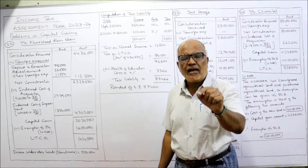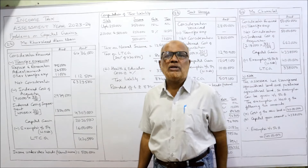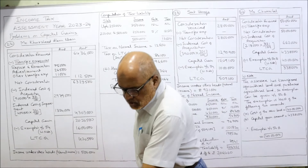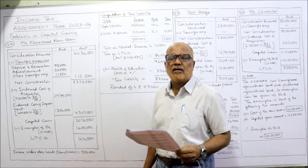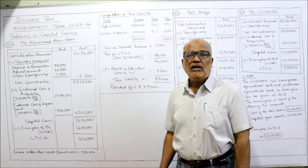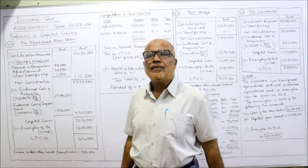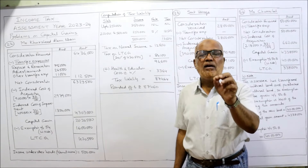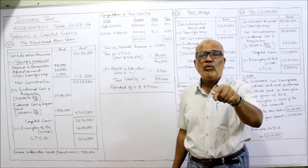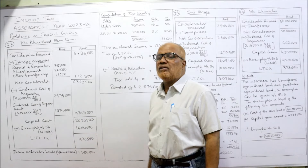From the net consideration we subtract the indexed cost of acquisition and indexed cost of improvement. Since he purchased the house before 1-4-2001, the assessee can choose the higher of actual cost or FMV. Actual cost is Rs. 4,00,000 but FMV on 1-4-2001 is Rs. 9,50,000, so he selects Rs. 9,50,000. However, the stamp duty value on that date was Rs. 9,00,000. The Income Tax Act says whichever is lower — stamp duty value or FMV — should be taken, so we take Rs. 9,00,000.